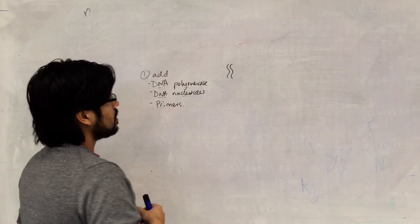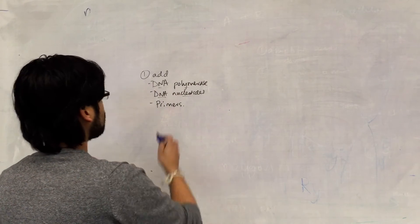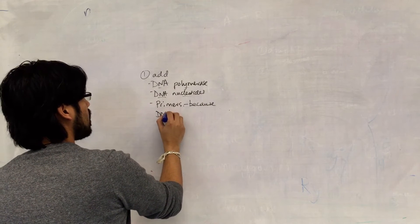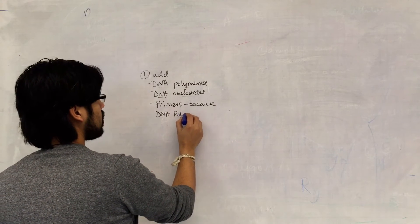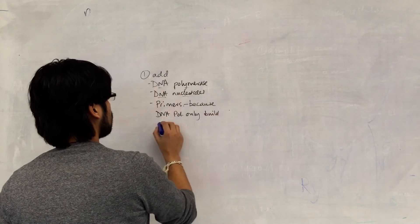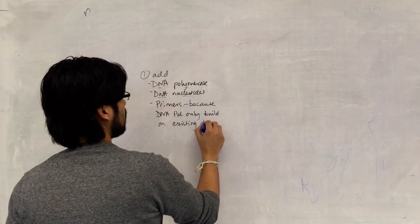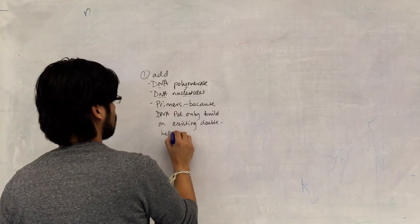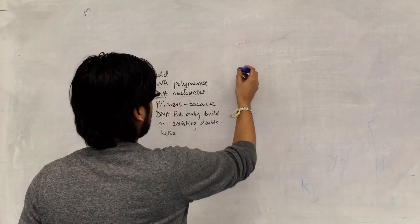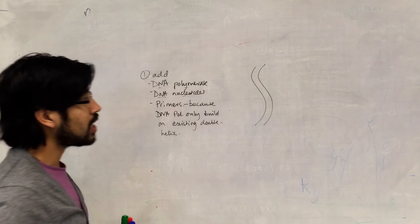Primers are added because DNA polymerase can only build on an existing double helix — it can't make a new strand from scratch. So what we have is our double-stranded DNA, and this is the section that we want to amplify.